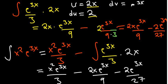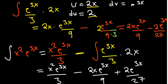Remember the minus sign distributes: the first part remains negative and the second part becomes positive. The final answer is x squared e to the power 3x over 3, minus 2x e to the power 3x over 9, plus 2e to the power 3x over 27, plus C. This is how we perform integration by parts where repetitive integration is required.